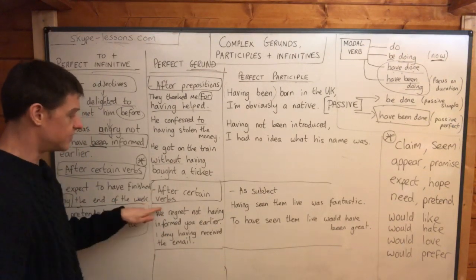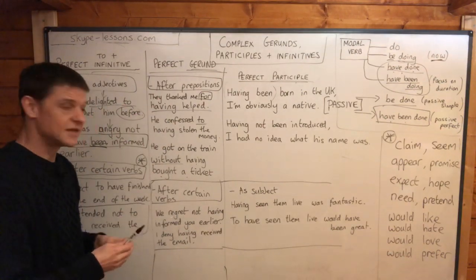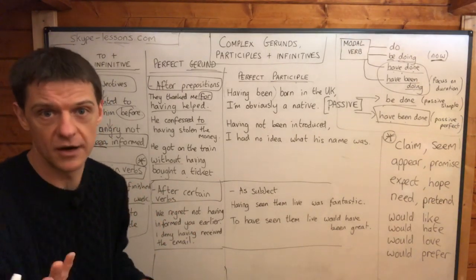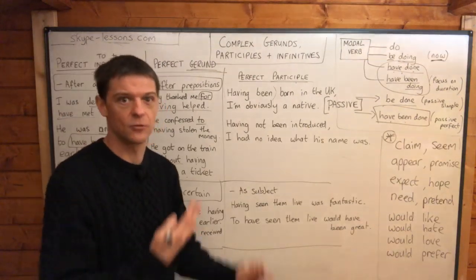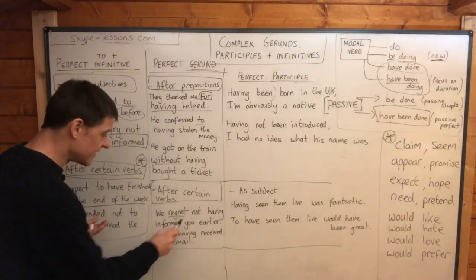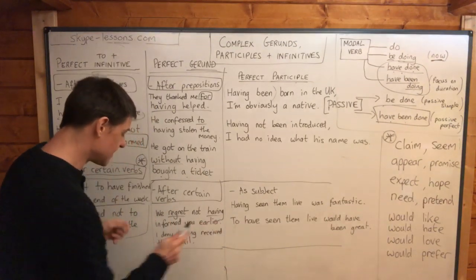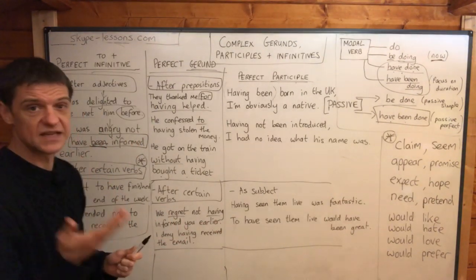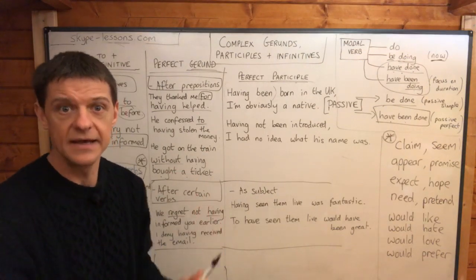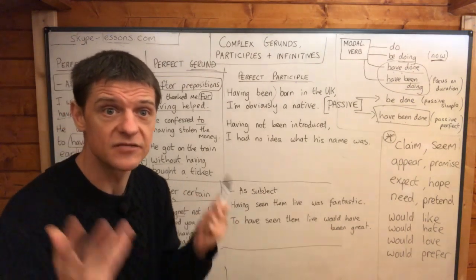After gerund verbs, we use the perfect gerund — it makes sense because these are gerund verbs. Regret is a gerund verb: 'we regret not having informed you earlier,' 'we regret not having sent you an email.' After regret, if it's something before the regret, you can use a perfect gerund. 'I deny having received the email' or 'he denied having killed the man.' You can say 'he denied killing the man,' but 'having killed' sounds really nice — why not use it?